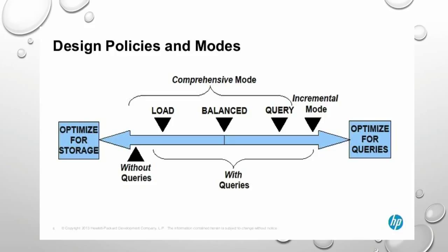The idea behind the DB designer is to come up with a set of projection definitions for some set of tables defined in a Vertica system. We run the DBD in two different modes: comprehensive mode and incremental mode. Comprehensive mode is like a fresh Vertica installation - you run it during setup to come up with the most efficient storage organization, starting from scratch. Incremental mode is for when you already have a production cluster running and want to fine-tune it because of changes in requirements, new tables, schema changes, or a different workload to optimize.